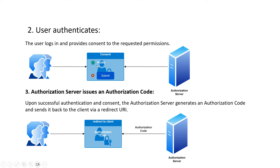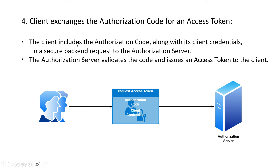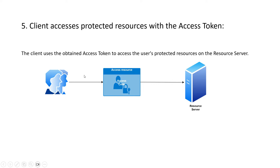Then it will give you the consent — whether you want to allow the client application to access certain information from your profile. You will be allowing the client, letting the authorization server know to go ahead and provide access to that information. Once submitted, the authorization server will generate a code called the authorization code, which will be sent to the client application. The client application will then use that authorization code along with its client credentials — which are already registered with the authorization server — to request an access token. Once the authorization server receives that, it will give the access token back.